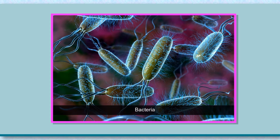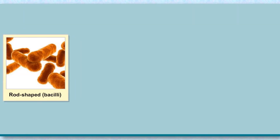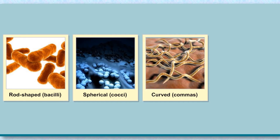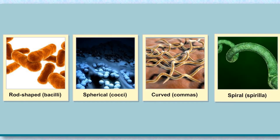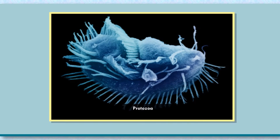Bacteria are the oldest organisms. They are unicellular and exist everywhere — in air, water, soil, and in the bodies of other living organisms. Bacteria are found in different shapes: rod-shaped (bacilli), spherical (cocci), curved (vibrio), and spiral (spirilla).